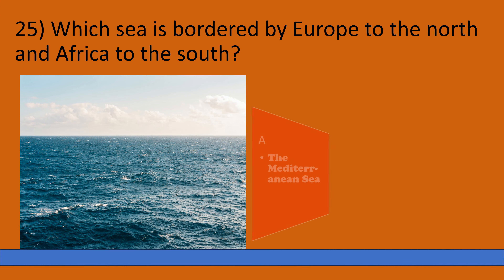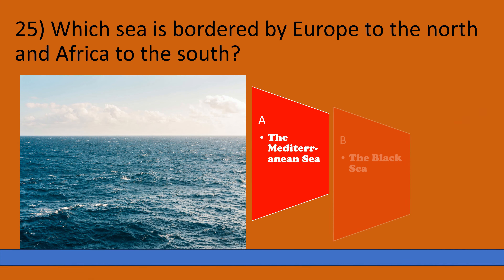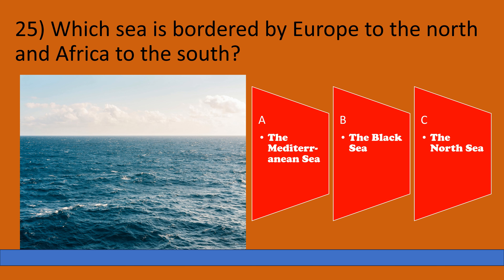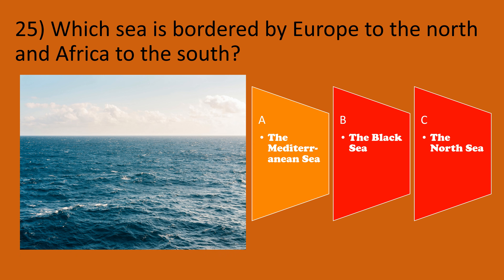Which sea is bordered by Europe to the north and Africa to the south? A: The Mediterranean Sea, B: The Black Sea, C: The North Sea. The correct option is A, The Mediterranean Sea.